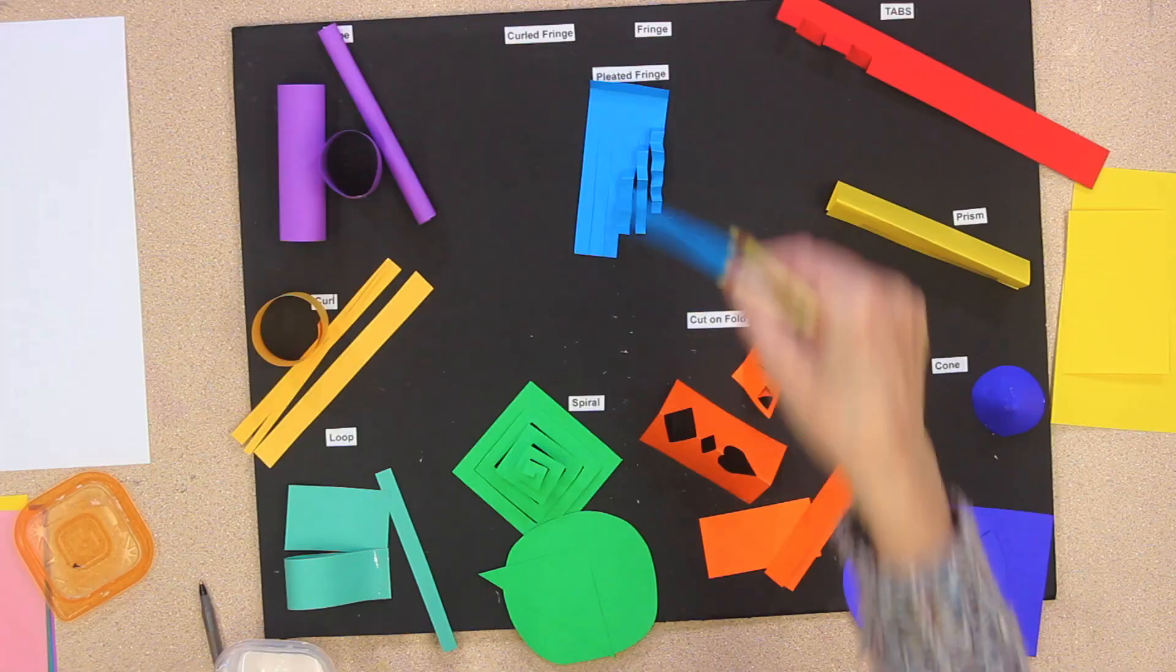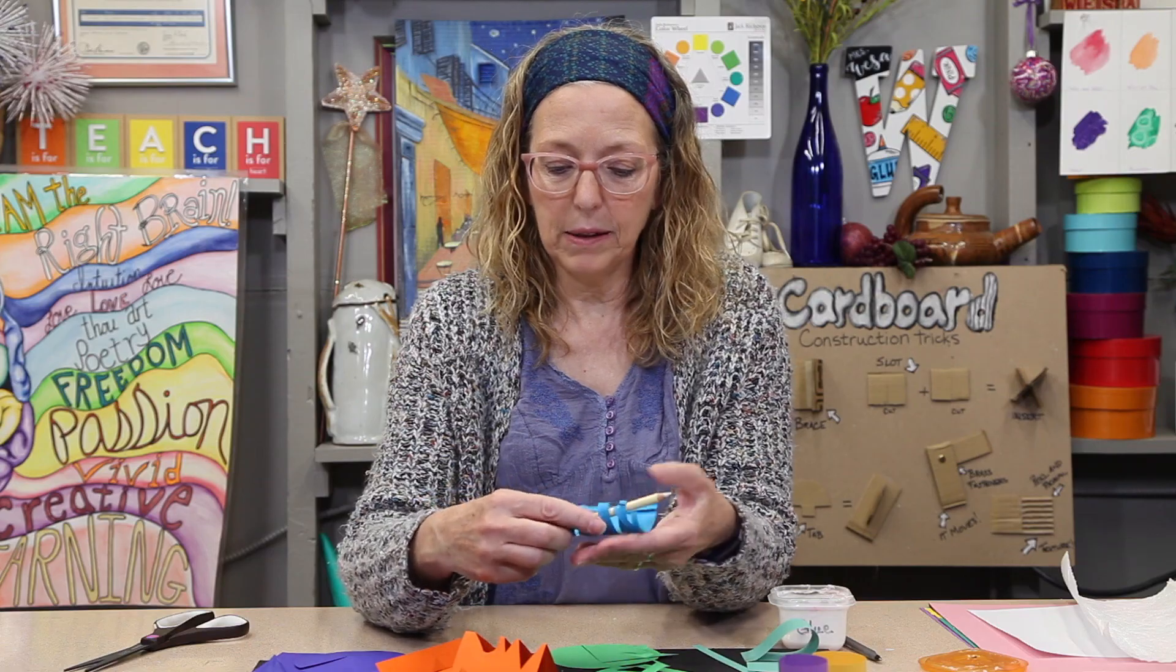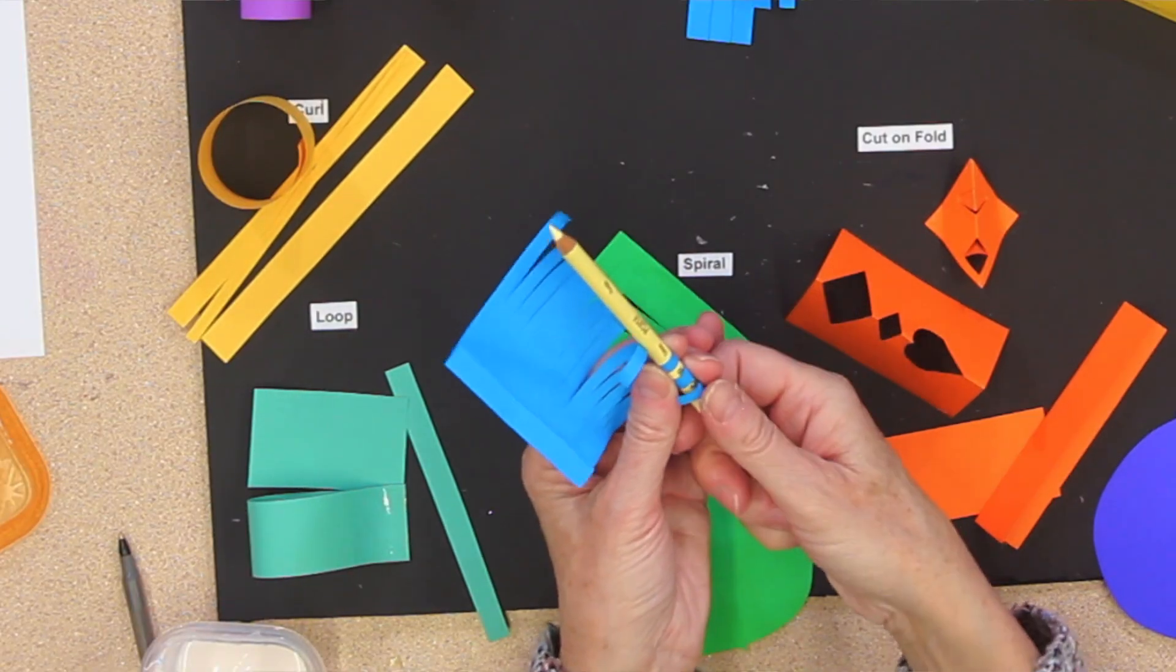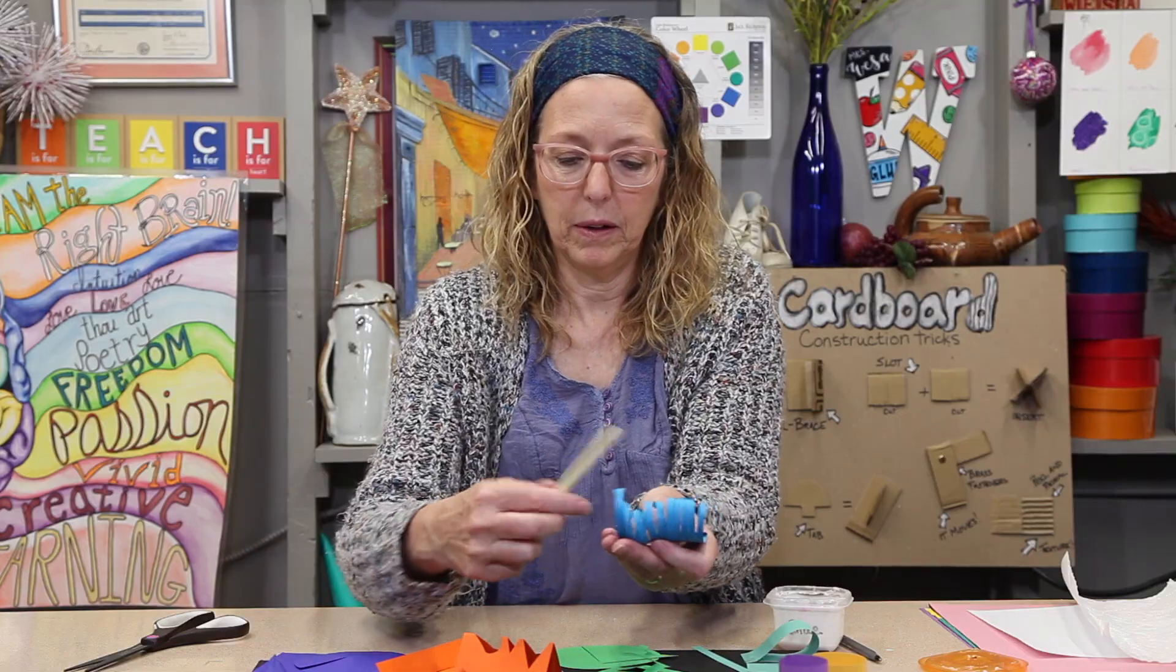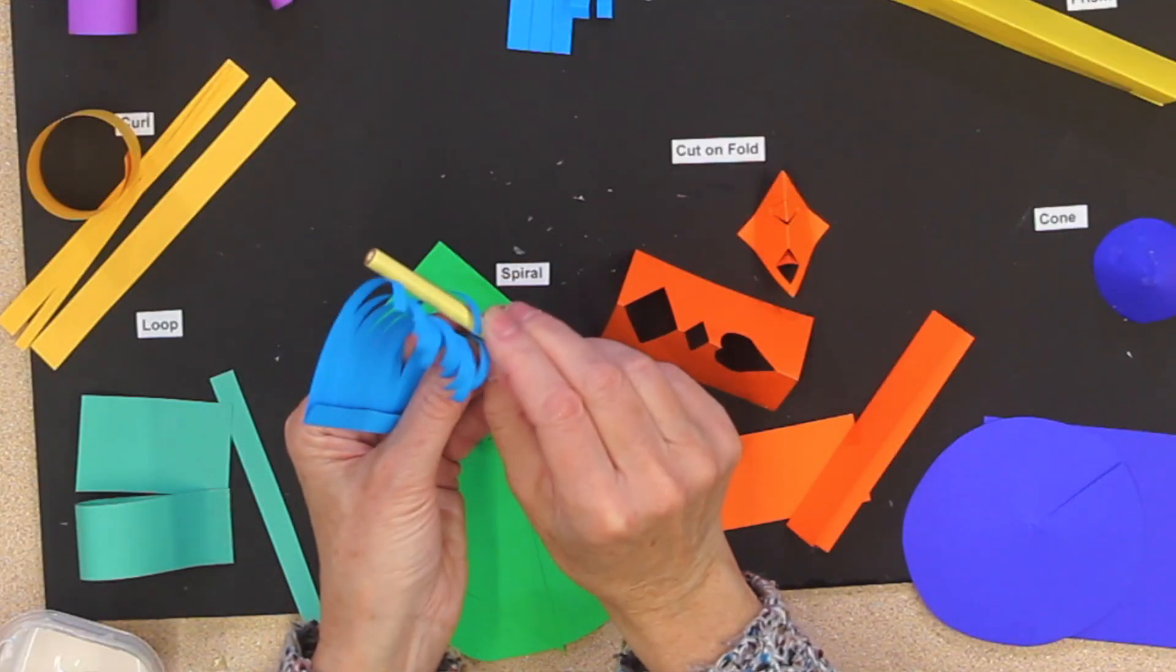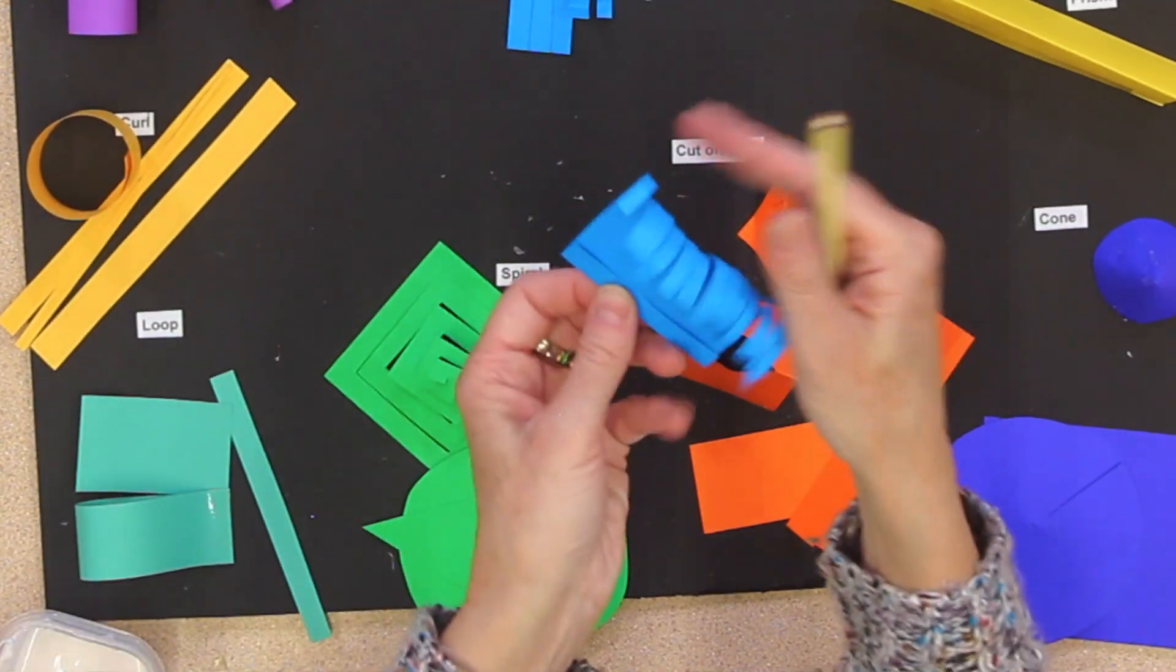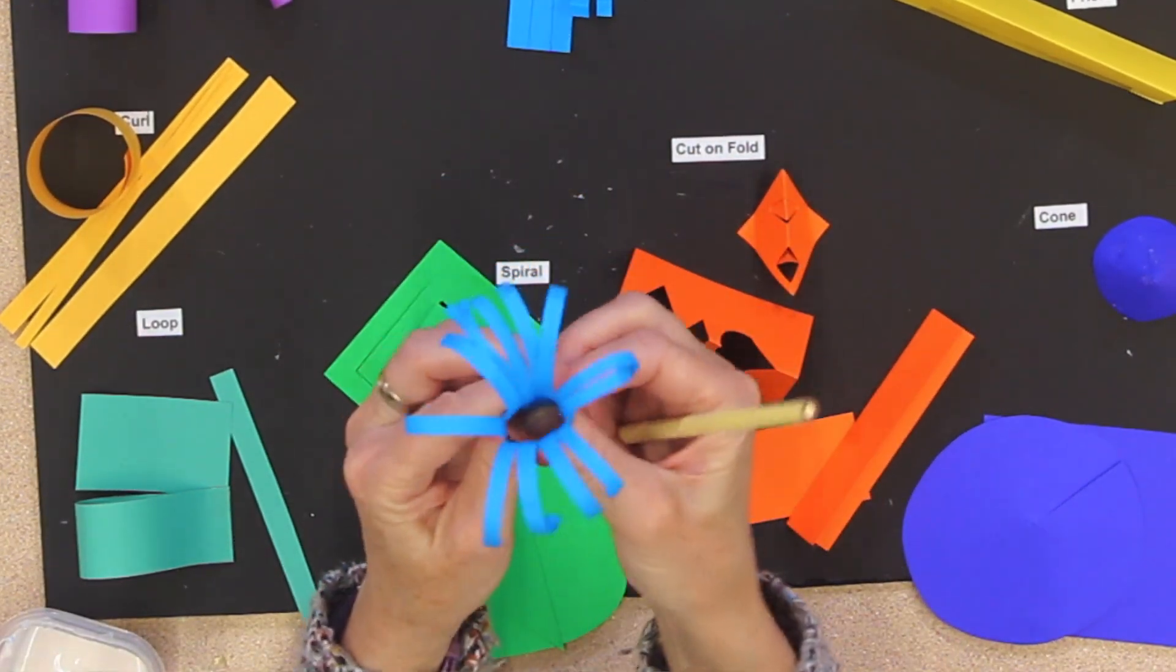Now the curl fringe. Same thing. You cut them just like this. But then you take a pencil, and just curl them around your pencil or your pen. So you can make that as tight as you want. And look at, look what happens here. How cool is that?